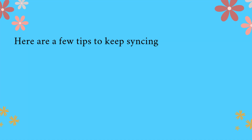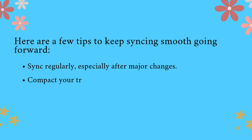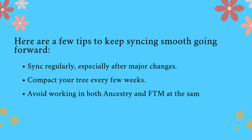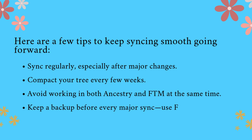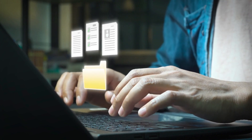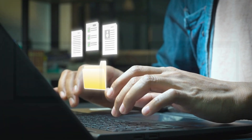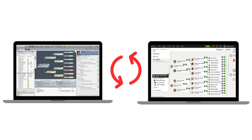Here are a few tips to keep syncing smooth going forward: sync regularly, especially after major changes; compact your tree every few weeks; avoid working in both Ancestry and FTM at the same time; and keep a backup before every major sync using File > Backup. Following these habits will save you time, frustration, and potentially your entire tree.